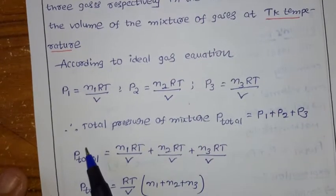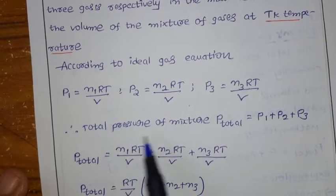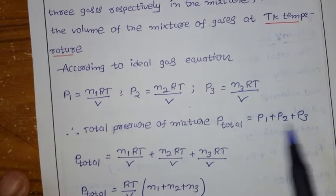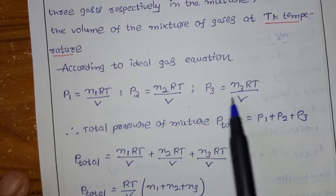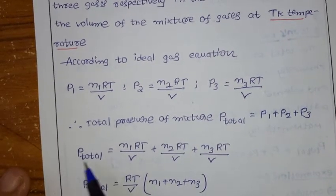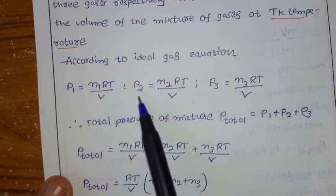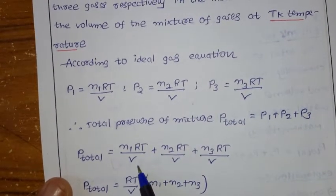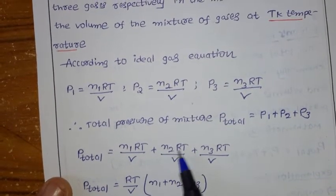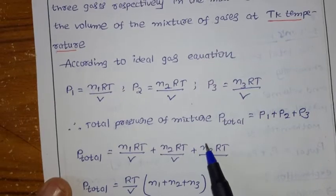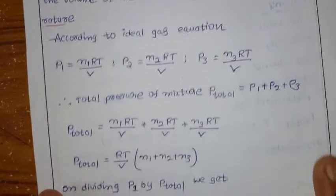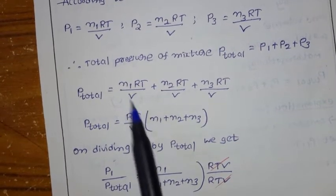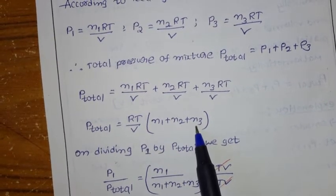According to Dalton's Law, P_total = P1 + P2 + P3. Substituting: P_total = N1RT/V + N2RT/V + N3RT/V. Taking RT/V as common: P_total = (RT/V)(N1 + N2 + N3).